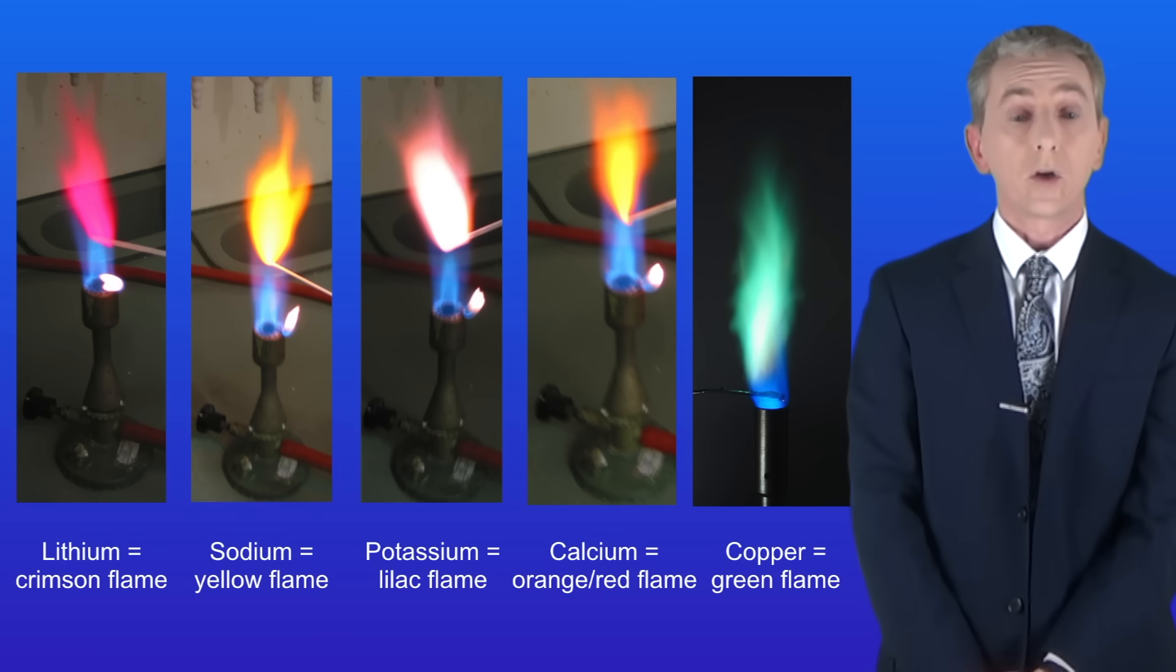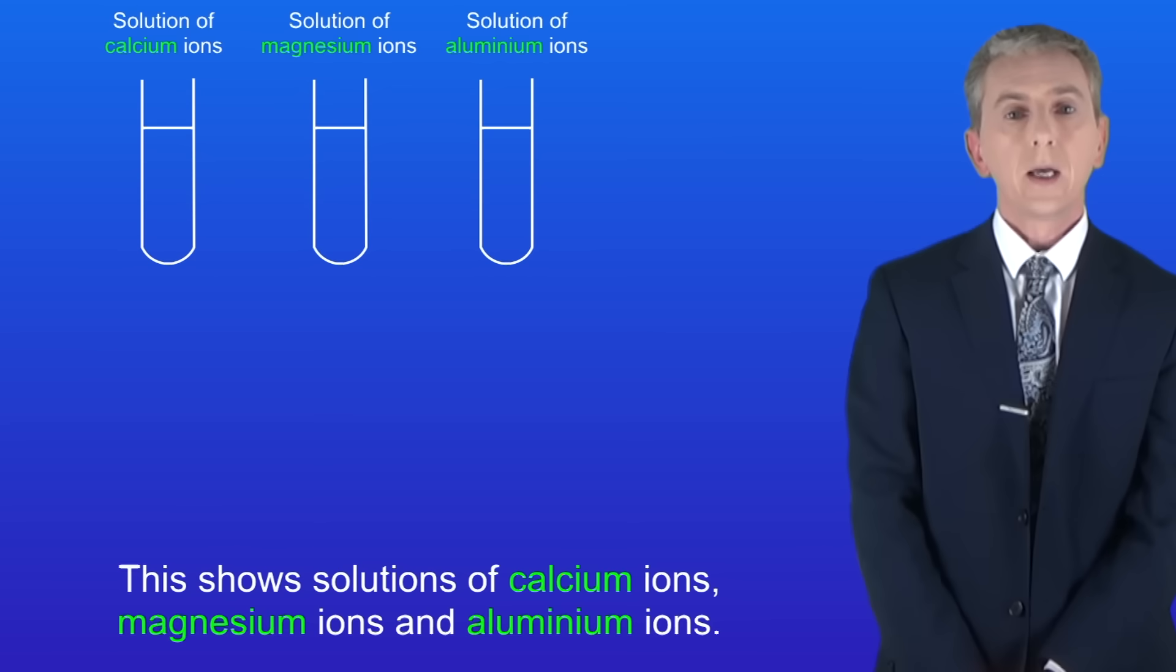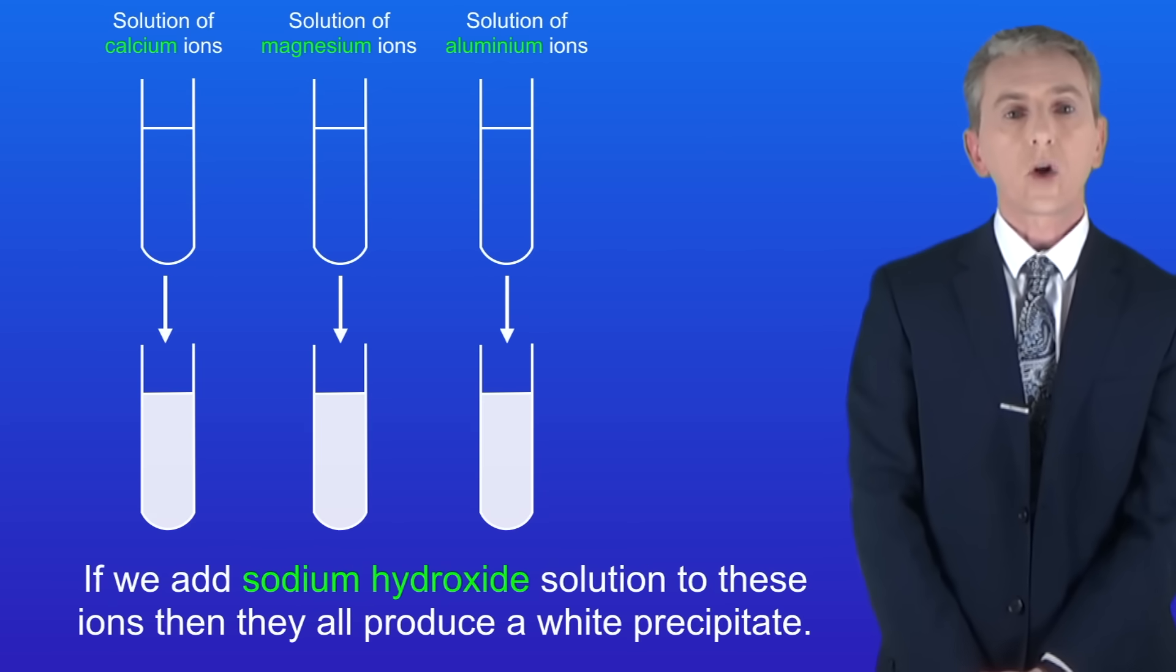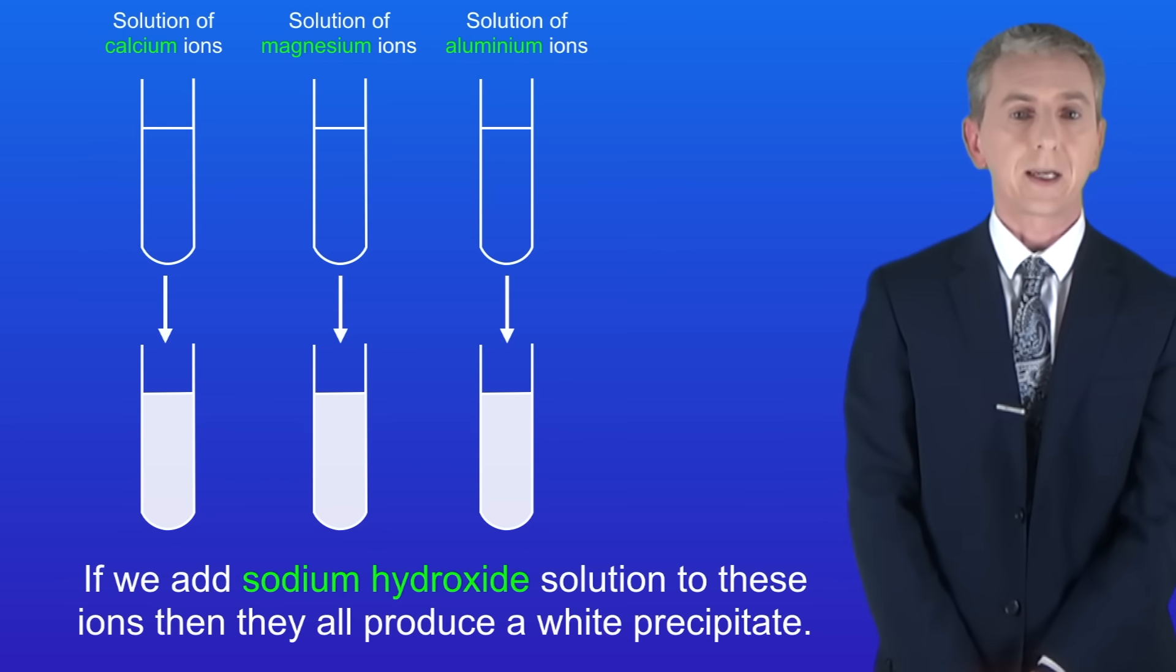I'd strongly recommend that you learn all of these tests, they often come in exams. I'm showing you here solutions of calcium ions, magnesium ions, and aluminum ions. If we add sodium hydroxide solution to these ions then they all produce a white precipitate like this.